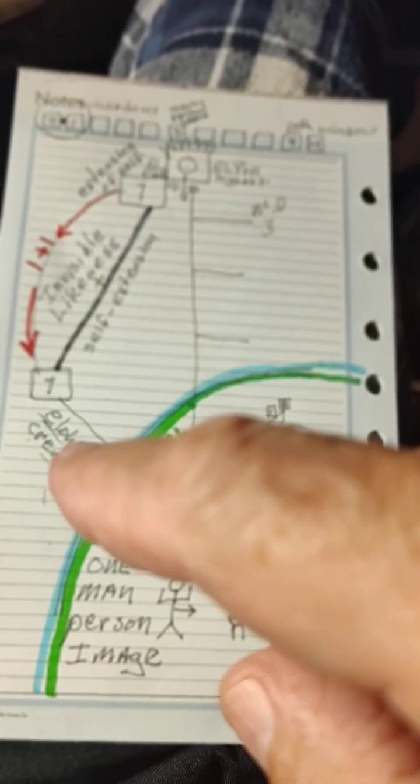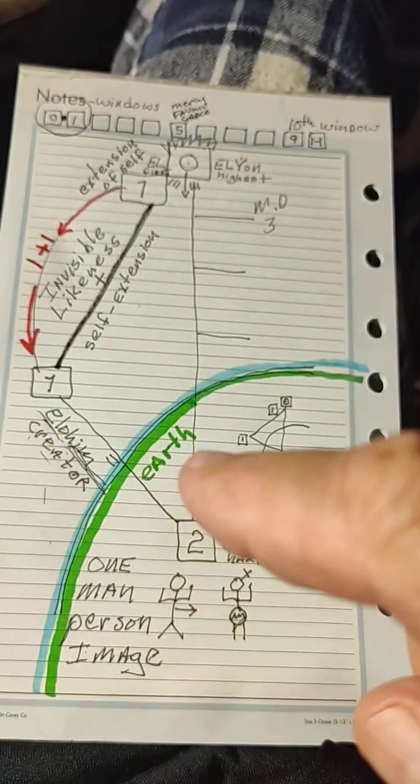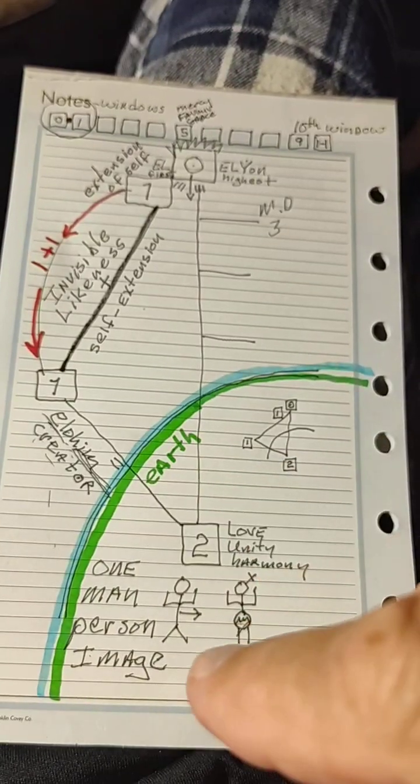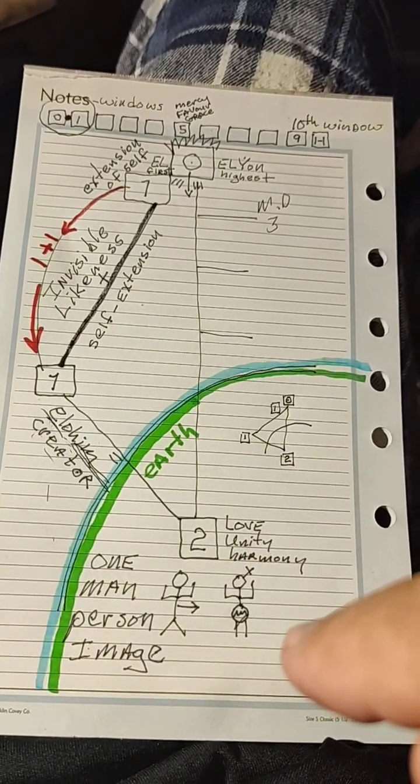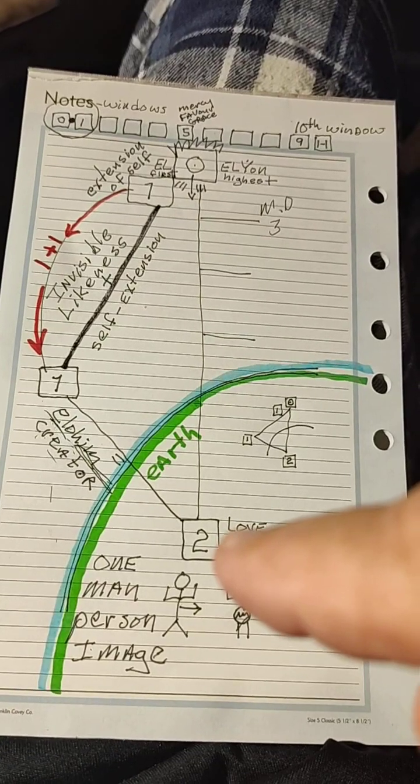And then Elohim, singular plural, in earth, in Adam, in Eve, two for the first time.